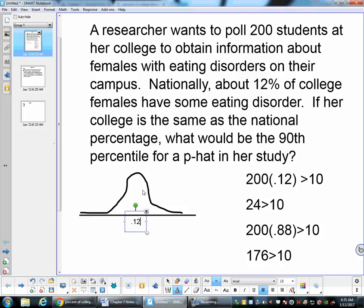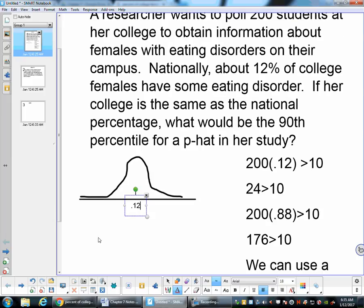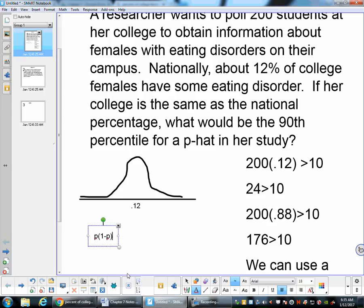Now we want to look at the variation to find the standard deviation for p hat. That's going to be p times 1 minus p all over n, and then square root that.